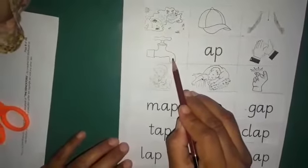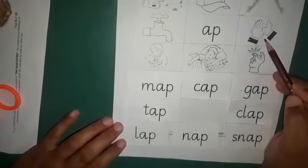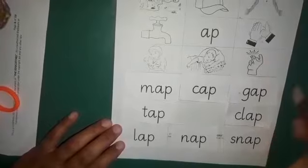And the next picture is tap. T, A, P, tap. The next picture is clap. The initial sound of clap is kh, lap.